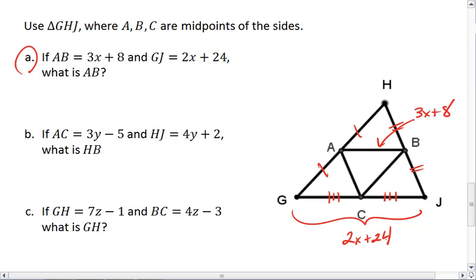One way is to reason through that if you double AB, then that will equal the length of GJ.